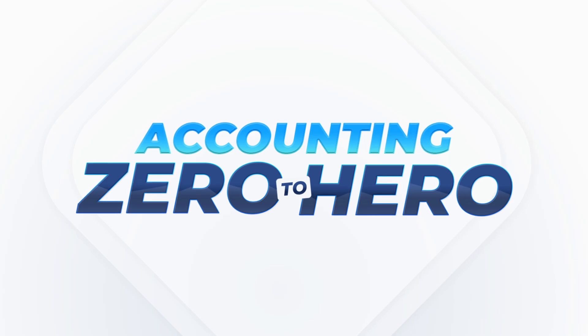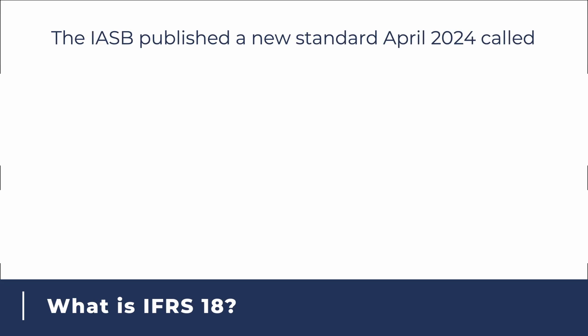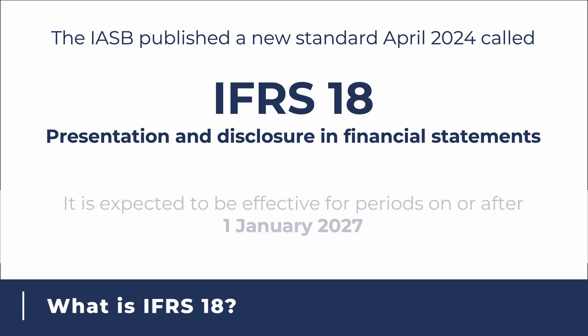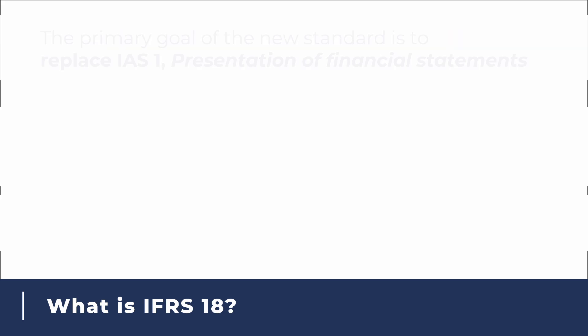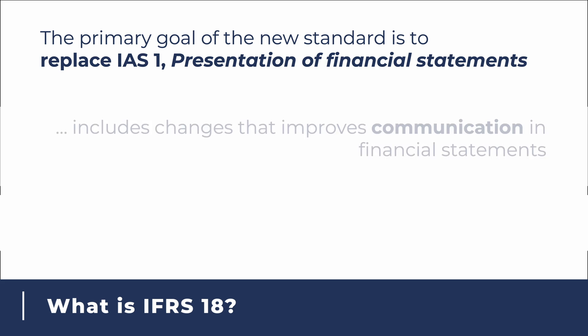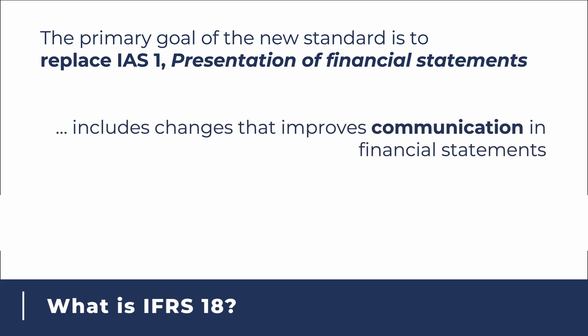The International Accounting Standards Board, or IASB, published a new standard in April 2024 called IFRS 18, Presentation and Disclosure in Financial Statements. This new standard is expected to be effective for periods beginning on or after January 1, 2027. The primary goal of this standard is to replace IAS 1, Presentation of Financial Statements, which includes changes that improve communication in financial statements. The effectivity is a few years from the actual issuance of the new standard to give time for companies to adapt their internal processes and systems to the new requirements.